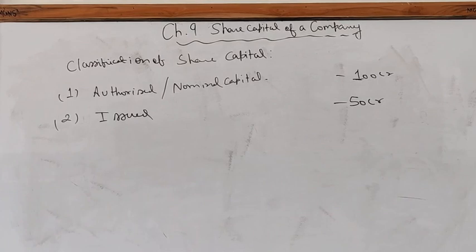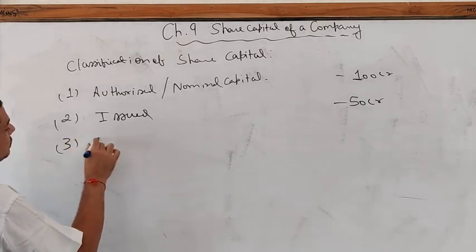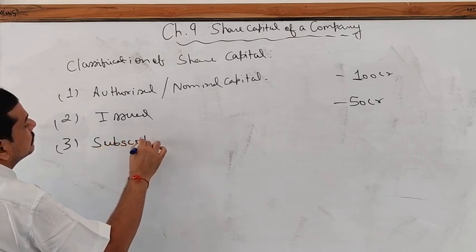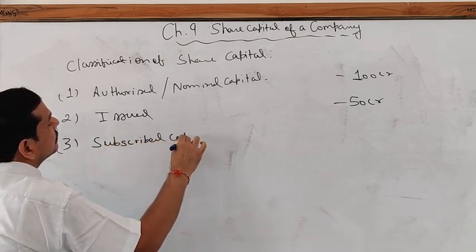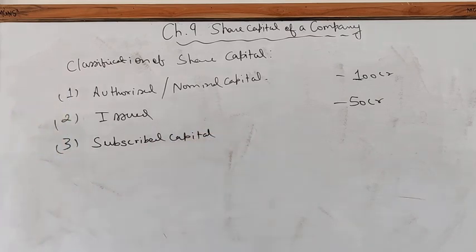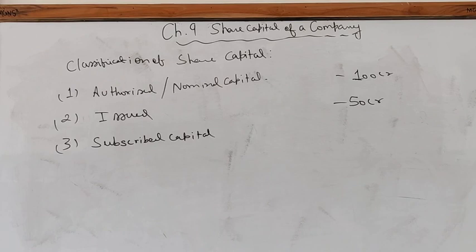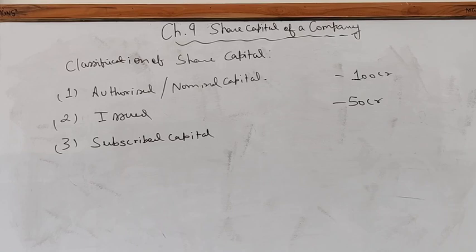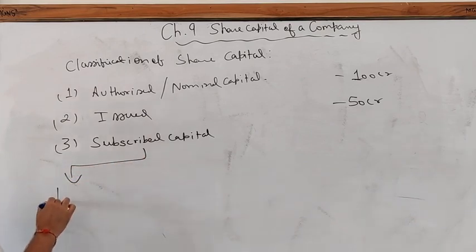Issued capital means such capital as the company issues from time to time for subscription. Third is subscribed capital — the part of issued capital which is for the time being subscribed by the members of the company. Subscribed capital is part of issued capital issued for cash or for consideration other than cash. It includes shares issued for subscription and subscribed by signatories to the Memorandum of Association. Subscribed capital has two parts: subscribed and fully paid up, and subscribed but not fully paid up.